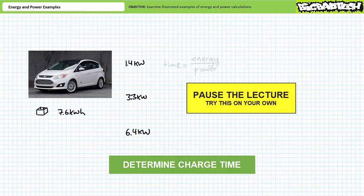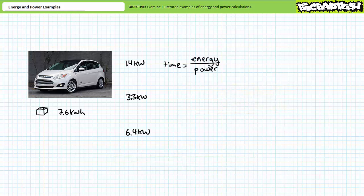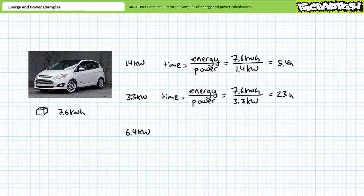If energy is power times time, then time is energy over power. For the 1.4 kilowatt rated 120-volt AC charger: 7.6 kilowatt hours over 1.4 kilowatts demonstrates a complete charge necessitates roughly 5.4 hours. For the 3.3 kilowatt rated 240-volt AC charger: 7.6 kilowatt hours over 3.3 kilowatts demonstrates a complete charge necessitates a shorter span of roughly 2.3 hours.